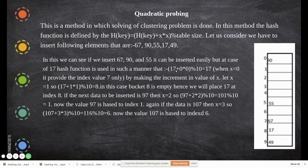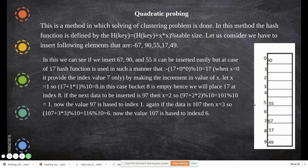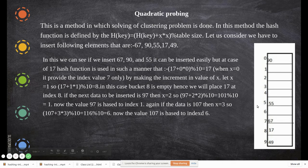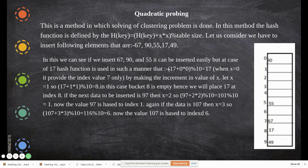So (17+0×0) mod 10, which is nothing but 17 mod 10, equals 7. The index is 7, and you have to keep it there. But first, we'll be inserting 67. The number 67 finds its place at index 7, because 67 mod 10 is 7.